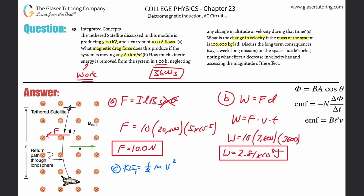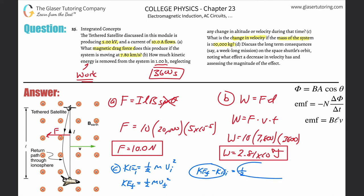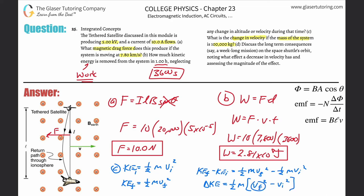What we have to do is write the initial kinetic energy as ½mv_i² and the final as ½mv_f². The change in kinetic energy is ΔKE = KE_f − KE_i = ½m·v_f² − ½m·v_i². Factoring out ½m gives ΔKE = ½m(v_f² − v_i²). You must square each velocity first and then subtract — that's the key point.